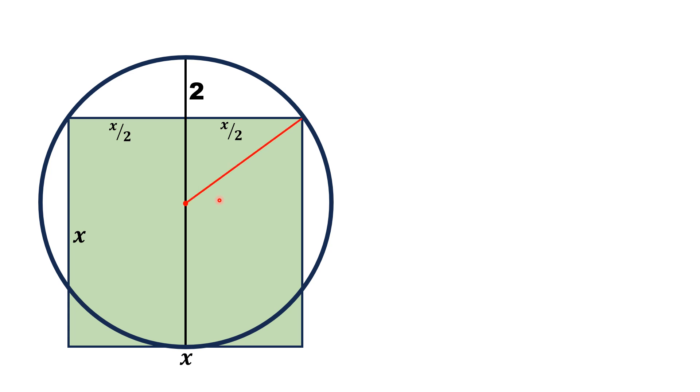Now let me say that this radius of the circle is small r. Then we can write that this whole length is the diameter of the circle, which is 2 times r, and it can also be written as 2 plus x. So from here we get an equation: 2r is equal to 2 plus x.